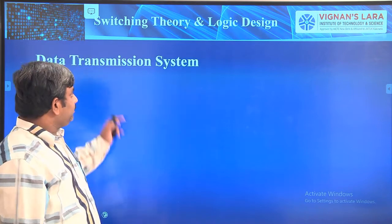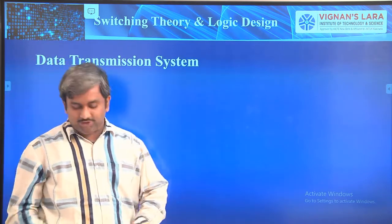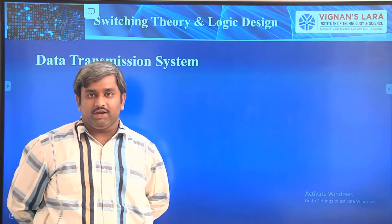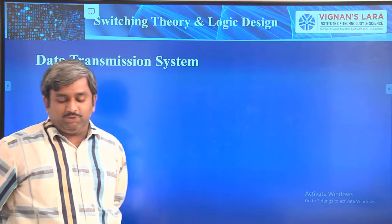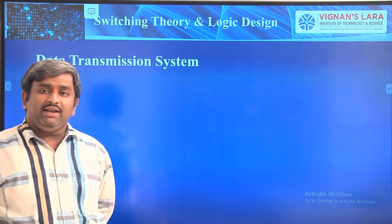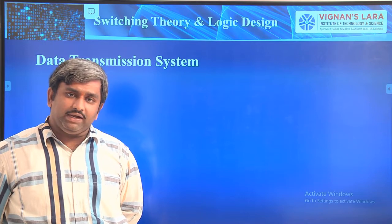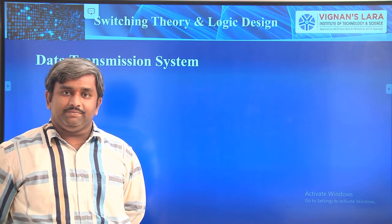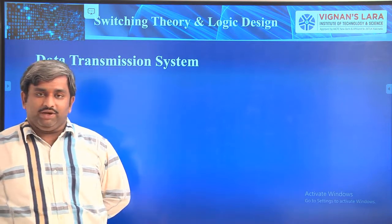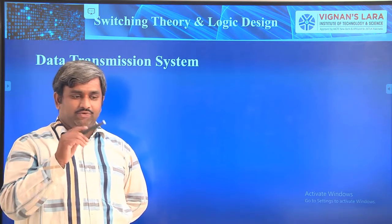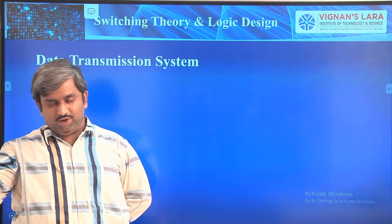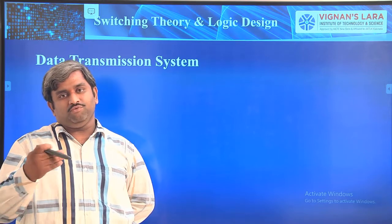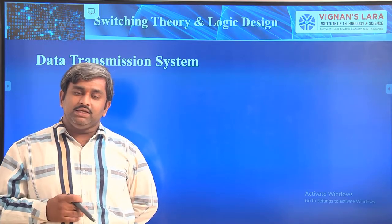First, we will see the Data Transmission System. Before going to the parity bits behavior or error detection and error correction, first we will see the Data Transmission System. Error detection or error correction — where do we get error? For example, if you have some data, say 11001 — this is the information. When you are transferring this information from one place to another place, then only you will get some error.